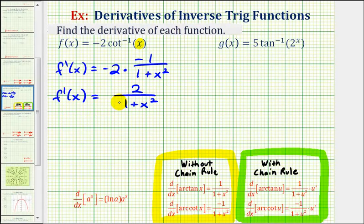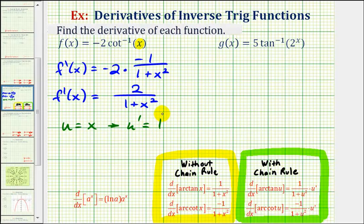Again, it's important to emphasize that if we did try to apply the chain rule to find this derivative, the result would be the same. In this case, the inner function would be x, therefore u would be equal to x, and therefore u prime, the derivative of u with respect to x, would be equal to one. So if we apply this derivative formula here, the derivative would be the same.